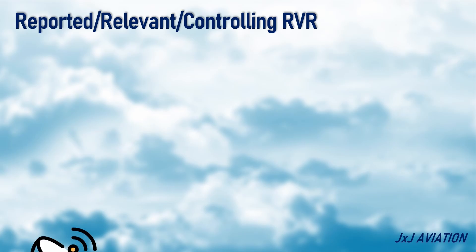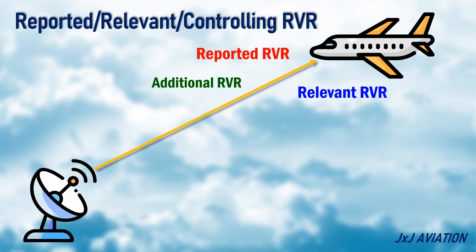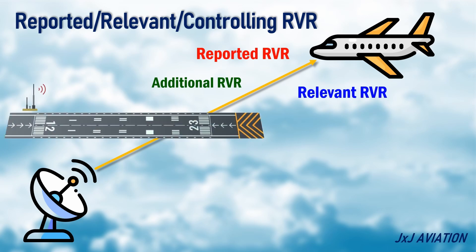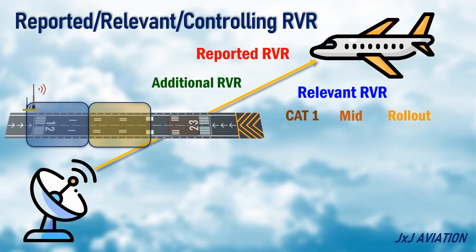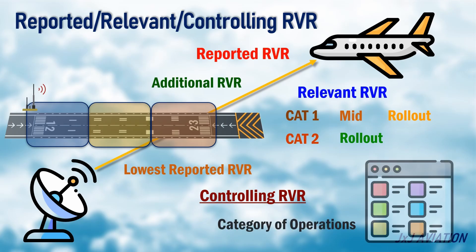The RVR information that is transmitted to the aircraft is called reported RVR. If additional RVR information is reported, it becomes relevant RVR. This means for CAT-1 operations, if mid or rollout RVR is reported, they become relevant. For CAT-2 operations, if the rollout zone RVR is reported, it becomes relevant. The lowest RVR of all the reported RVRs is the controlling RVR, which is used to determine the category of operations.